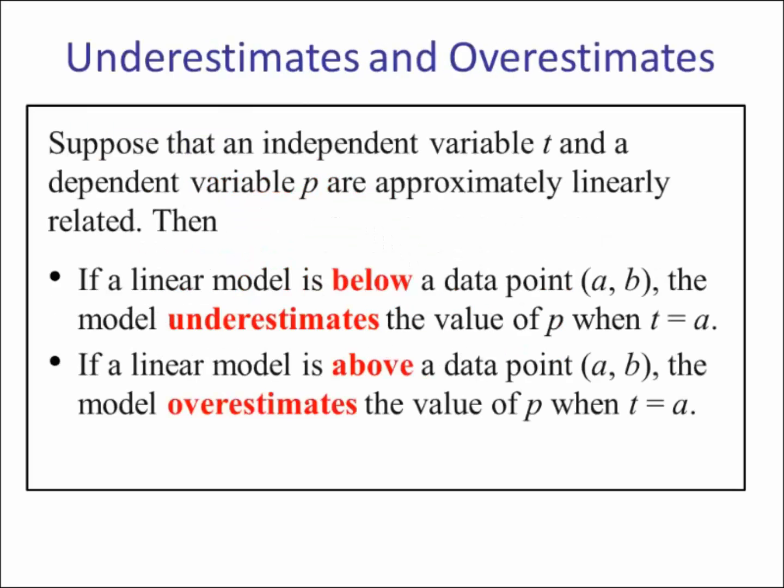Suppose that an independent variable t and a dependent variable p are approximately linearly related. Then if a linear model is below a data point (a, b), the model underestimates the value of p when t equals a. If the linear model is above the data point (a, b), then the linear model overestimates the value of p when t equals a.